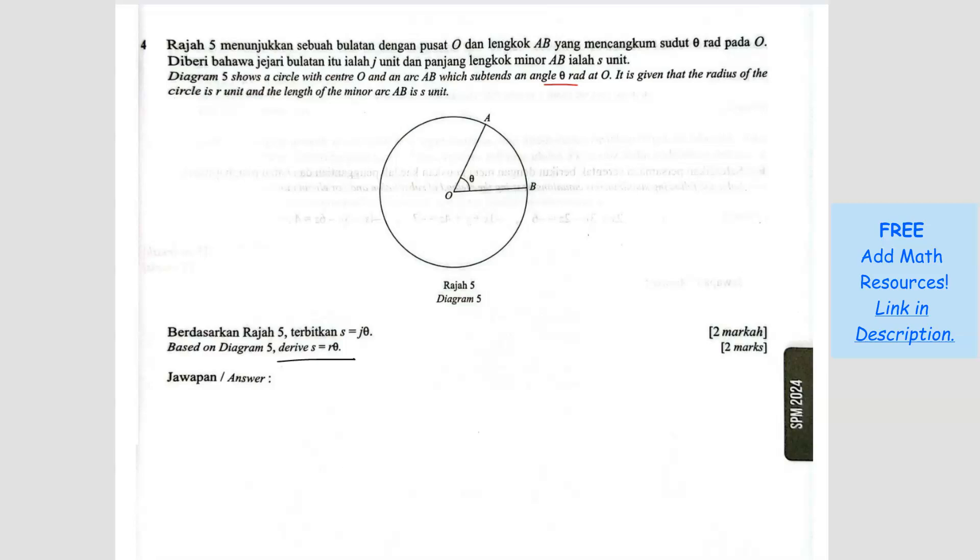So they just want us to derive basically. So derivation. When you want to derive this, you have to start with the ratio. What is the ratio? The ratio is, we are comparing, let's say arc length,